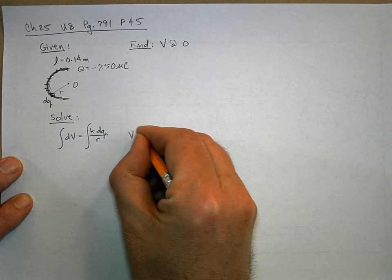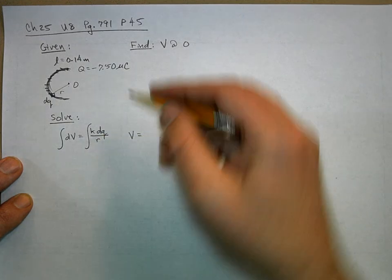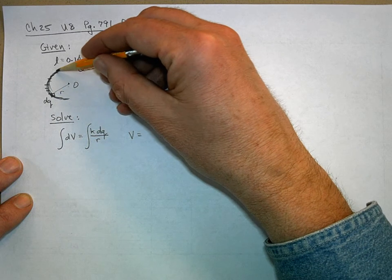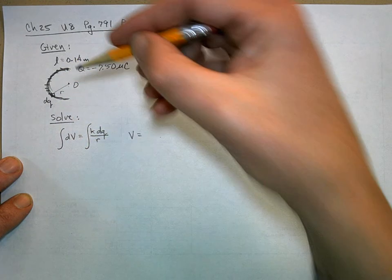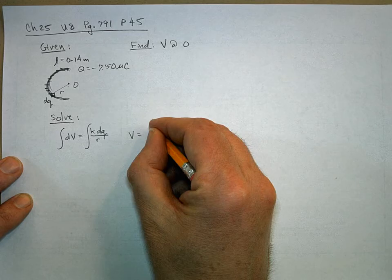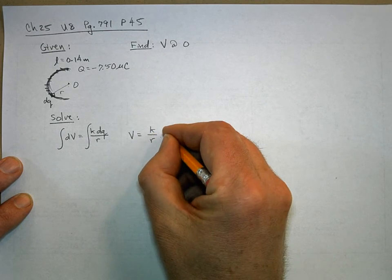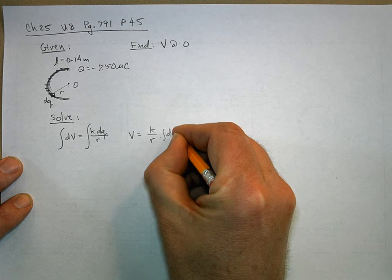So V equals... the one thing to realize is that R is a constant all the way around here. So this is going to be K over R times the integral of dQ.